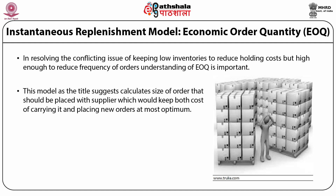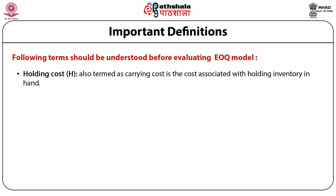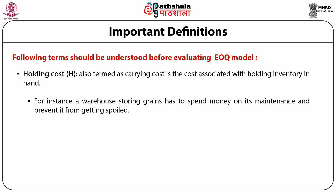The EOQ model calculates the size of order that should be placed with a supplier, keeping both the cost of carrying inventory and placing new orders at their most optimum. Holding cost, also termed as carrying cost, is the cost associated with holding inventory in hand. They include storage cost, spoilage cost, obsolescence cost, etc. For instance, a warehouse storing grains has to spend money on maintenance and preventing spoilage.